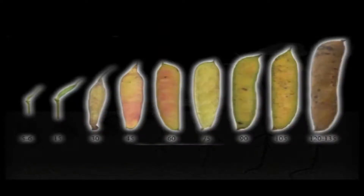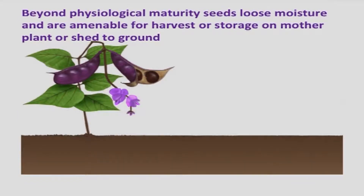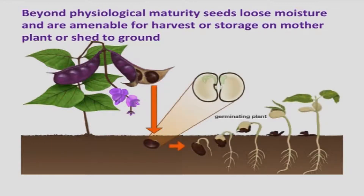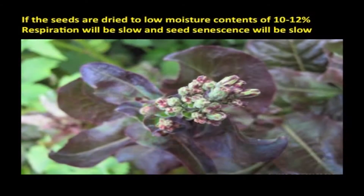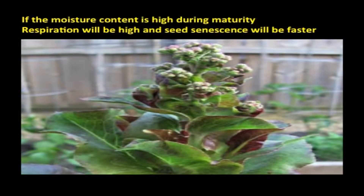When do seeds start aging? Seeds start aging once they reach physiological maturity. At physiological maturity, seeds have stopped accumulating food and the embryo is morphologically complete. Beyond physiological maturity, seeds lose moisture and are amenable for harvest or storage on the mother plant or shed to ground. Hence, beyond physiological maturity, seeds start to age. If seeds are dried to low moisture contents of 10 to 12 percent, respiration will be slow and seed senescence will be slow. If moisture content is high, as during rainfall at maturity, seed moisture will be very high, respiration will be high, and seed senescence will be faster.